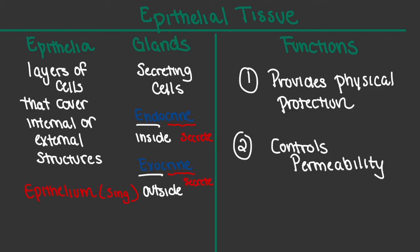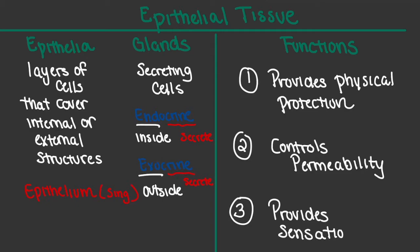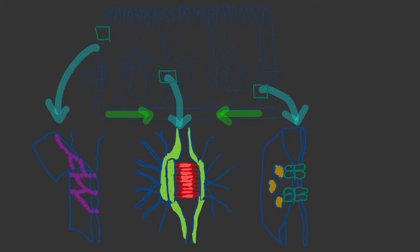Our third function of epithelial tissue is that it provides sensation for the body. Our epithelial tissue is responsible for detecting changes in our outside environment, and those changes allow the body to make changes internally so that we maintain homeostasis. What we're going to do next is investigate what we call the intercellular connections.